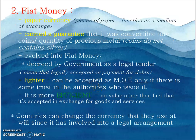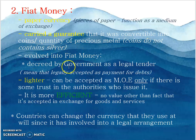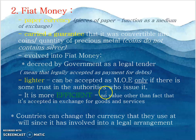The second is fiat money — paper currency, pieces of paper that function as a medium of exchange. It carries a guarantee that it was convertible into coins or a quantity of precious metals. For example, coins no longer contain silver. Fiat money is decreed by the government as legal tender, meaning it is legally accepted as payment for debt. It is lighter and accepted as a medium of exchange only because of the authority that issues it. It is more efficient, having no value other than the fact that it is accepted in exchange for goods and services.